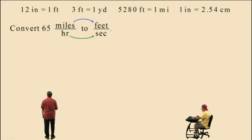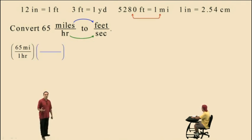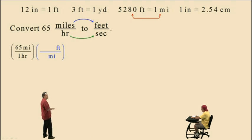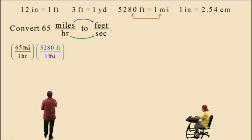Let's begin with our given quantity, which is a rate: 65 miles per one hour. Our first conversion factor is going to work on the miles — converting miles to feet. Notice we put miles on the bottom, feet on the top. We require the ratio of feet to miles, and that ratio is 5,280 to 1. Notice the units of miles cancel out. At this point, our units are feet per hour — if we were to take 65 and multiply by 5,280, the units would be feet per hour. But we don't want feet per hour; we want feet per second.